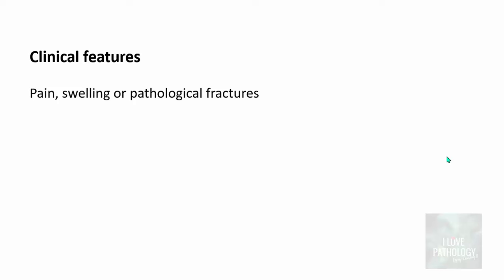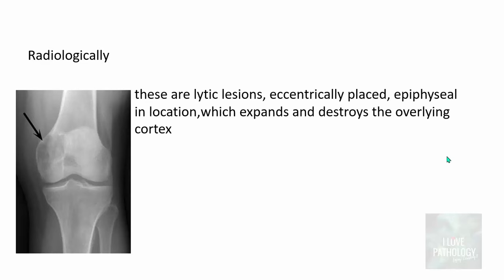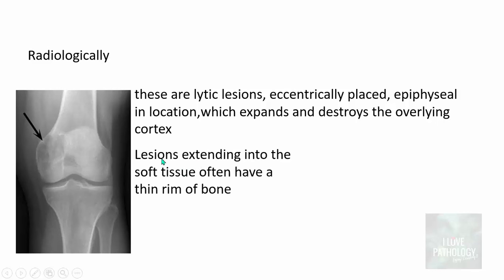How do they present? They present with either pain, swelling, or pathological fractures. They have a very classical radiological appearance — these are lytic lesions which are eccentrically placed, epiphyseal in location, which expand and destroy the overlying cortex. As they do, the lesions can extend into the soft tissue, often with a very thin rim of bone, and that is referred to as egg shell appearance — the fourth 'E' of Giant cell tumor, apart from epiphyseal, eccentric, and expansile.